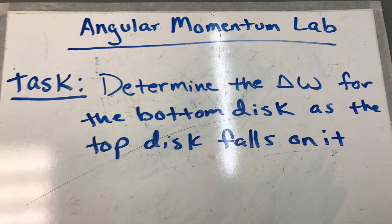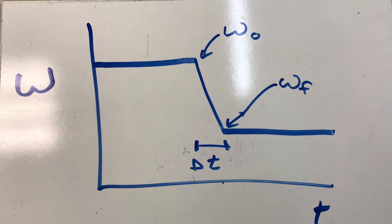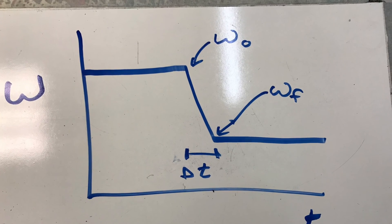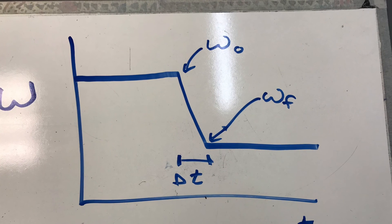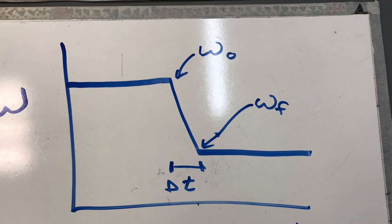The first task is to determine the change in omega for the bottom disk as the top disk falls on top of it. It's going to be spinning, and then something lands on it, changing its angular velocity. The computer will spit out a graph — you don't need to print it, but sketch it in your notes. We just want a simple sketch of the values you got off the graph, as you'll see how we got them off of LoggerPro.